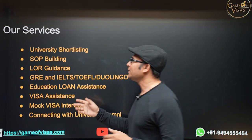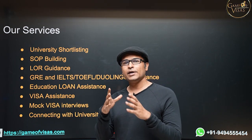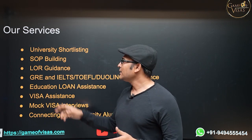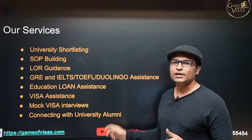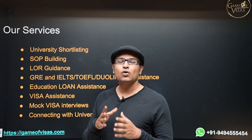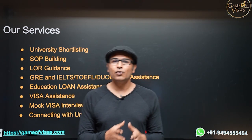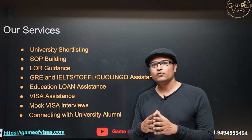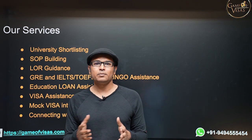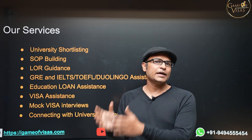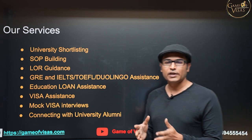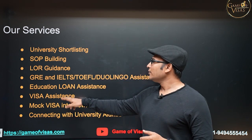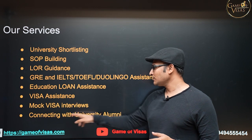These are the services we provide: university shortlisting based on your profile, statement of purpose writing, LOR guidance, GRE and English test assistance, and education loan assistance. You don't need any collateral — you can get an education loan without any security. Whatever your fee range, you can apply for 10 lakh, 20 lakh, or 50 lakh universities and get a complete education loan, which you can pay off in one year after getting a job. We also do visa assistance, mock visa interviews, and connecting with university alumni.